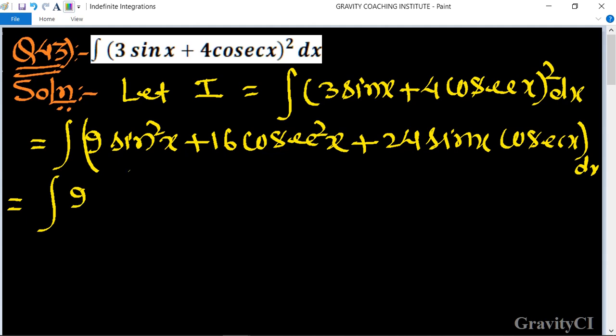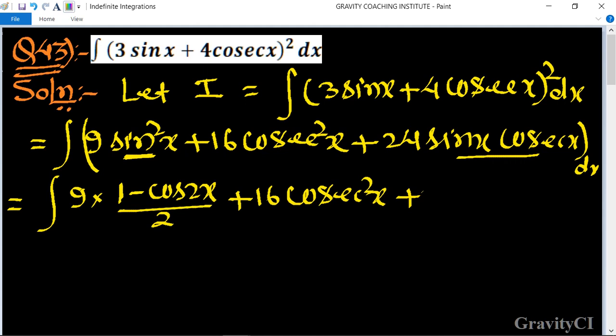Nine, here sin² x, direct integration identity use karenge, trigonometric identity use karenge: (1 - cos 2x) upon 2, plus 16 cos² x. Ka integration ho jayega... sin² x into cos² x is equal to 1 hota hai, to yeh 24 dx.